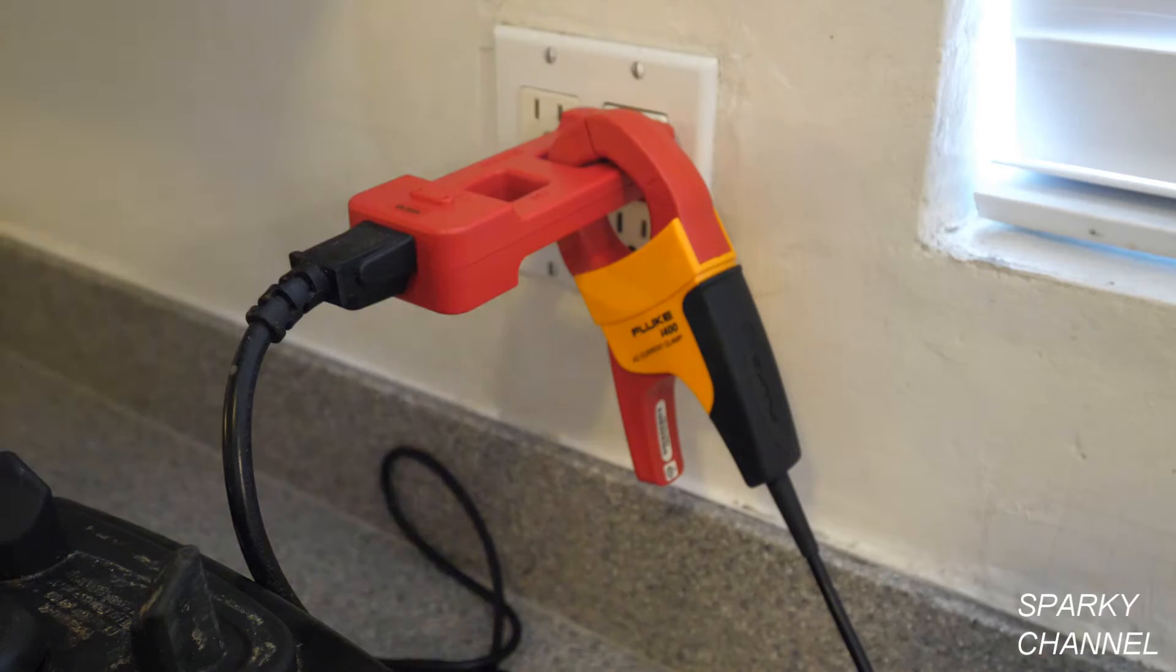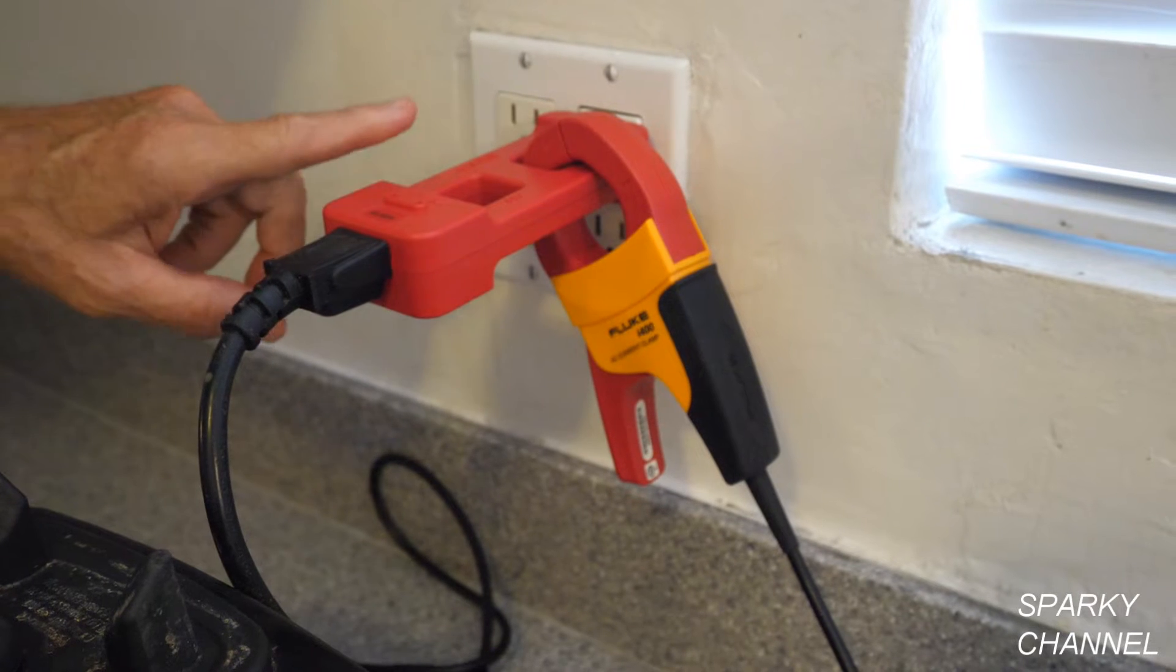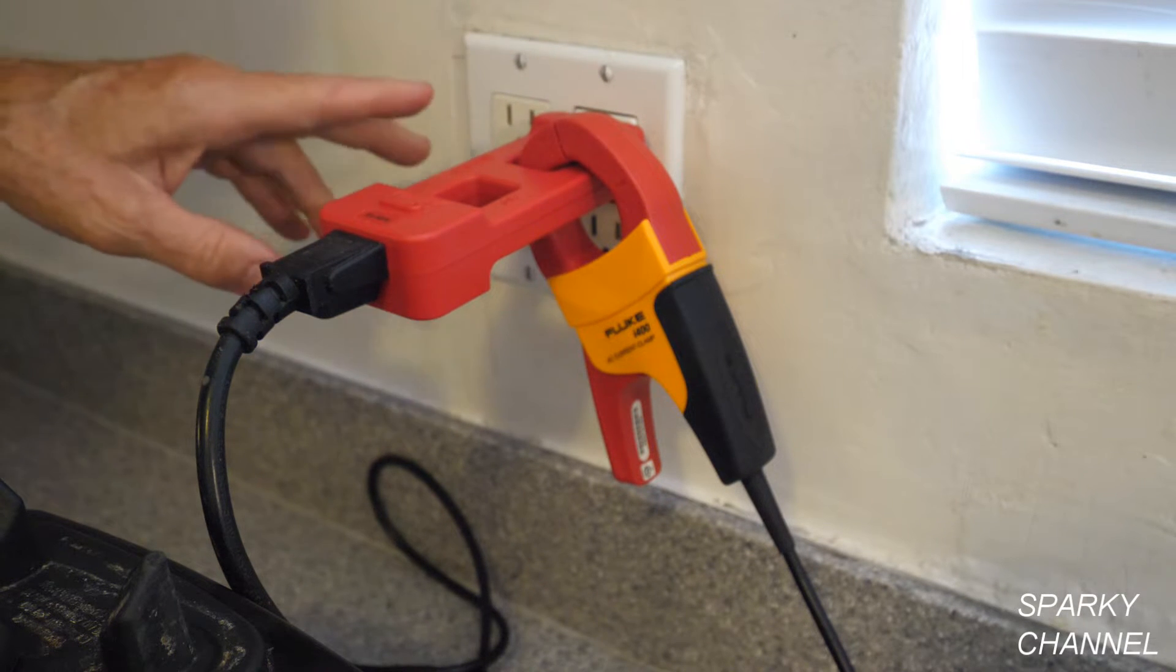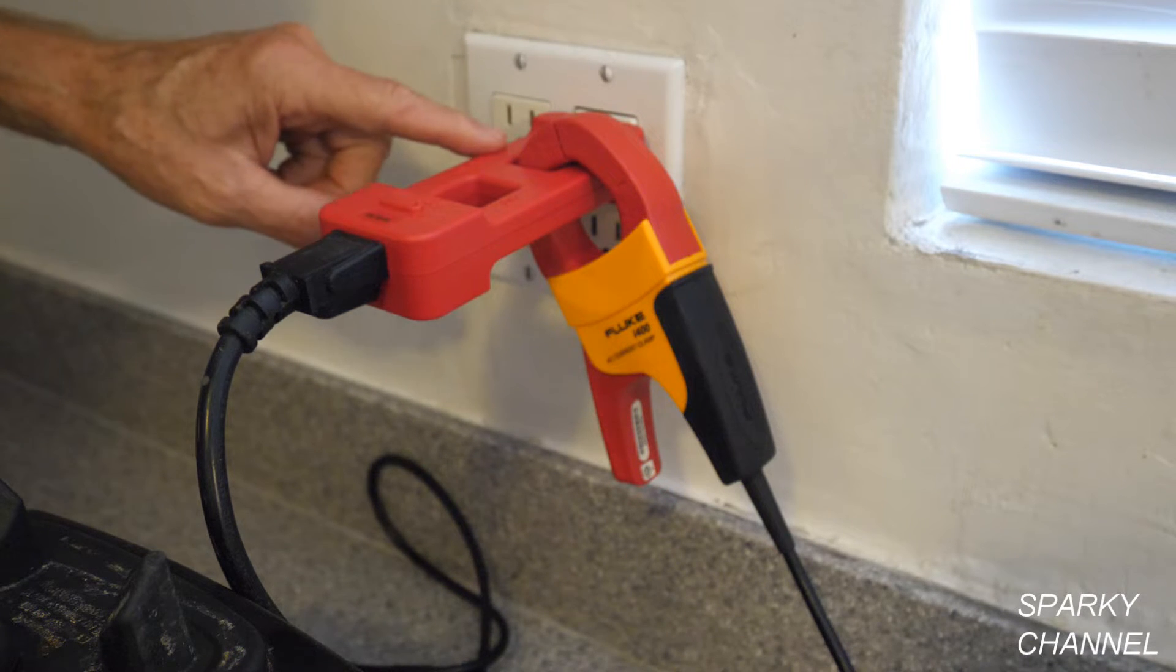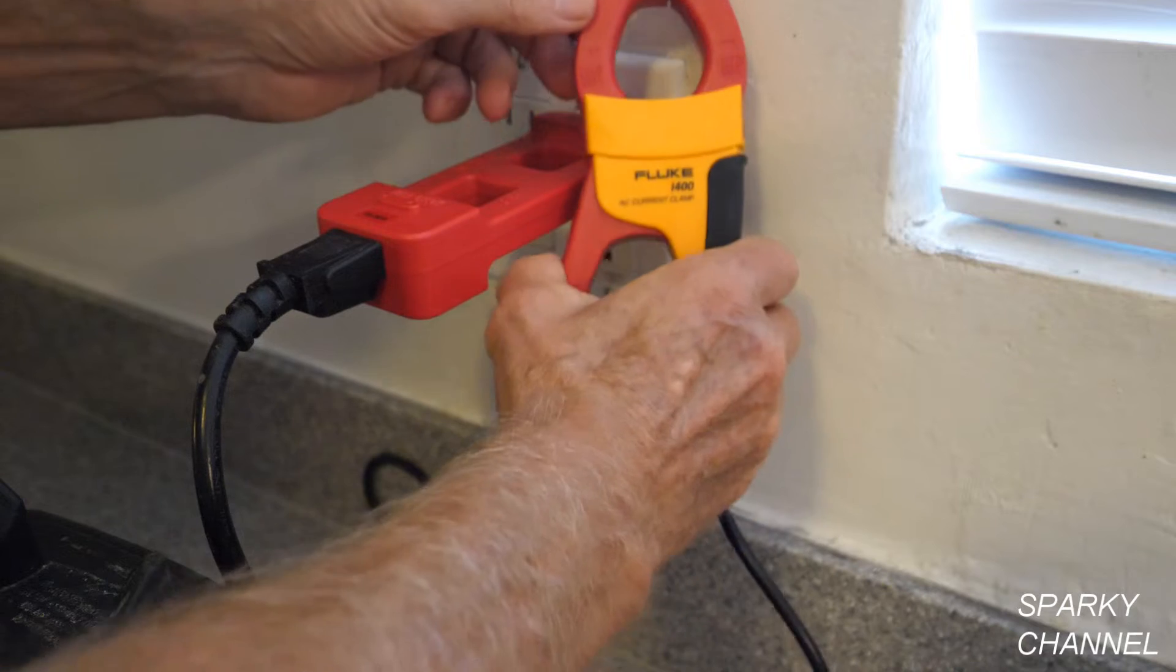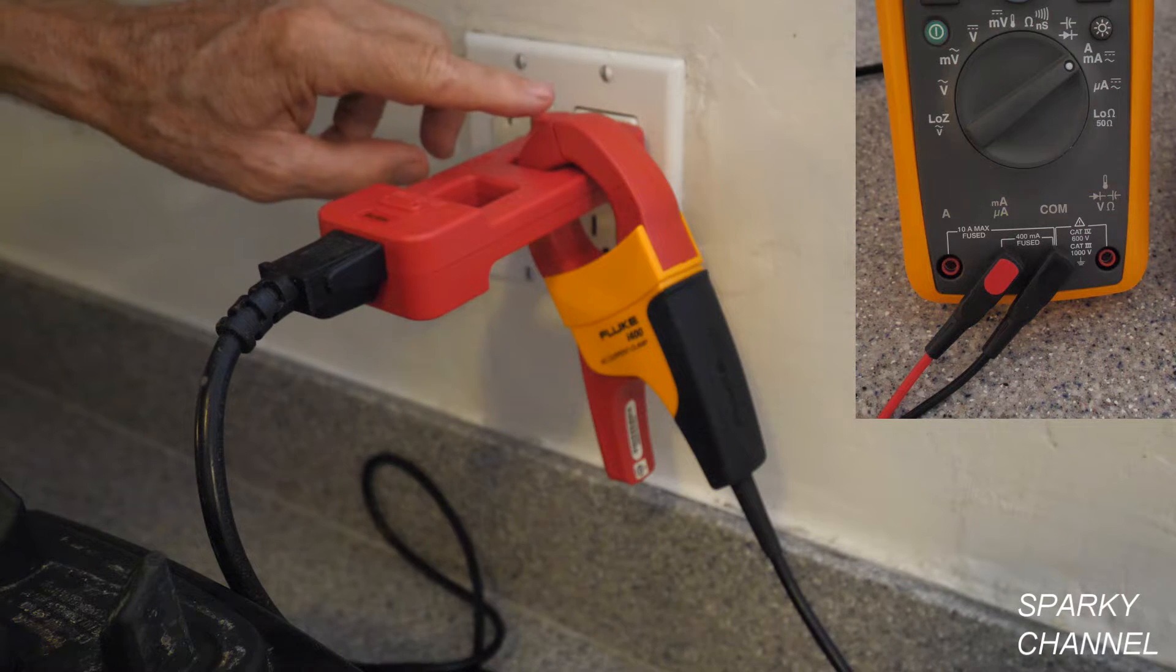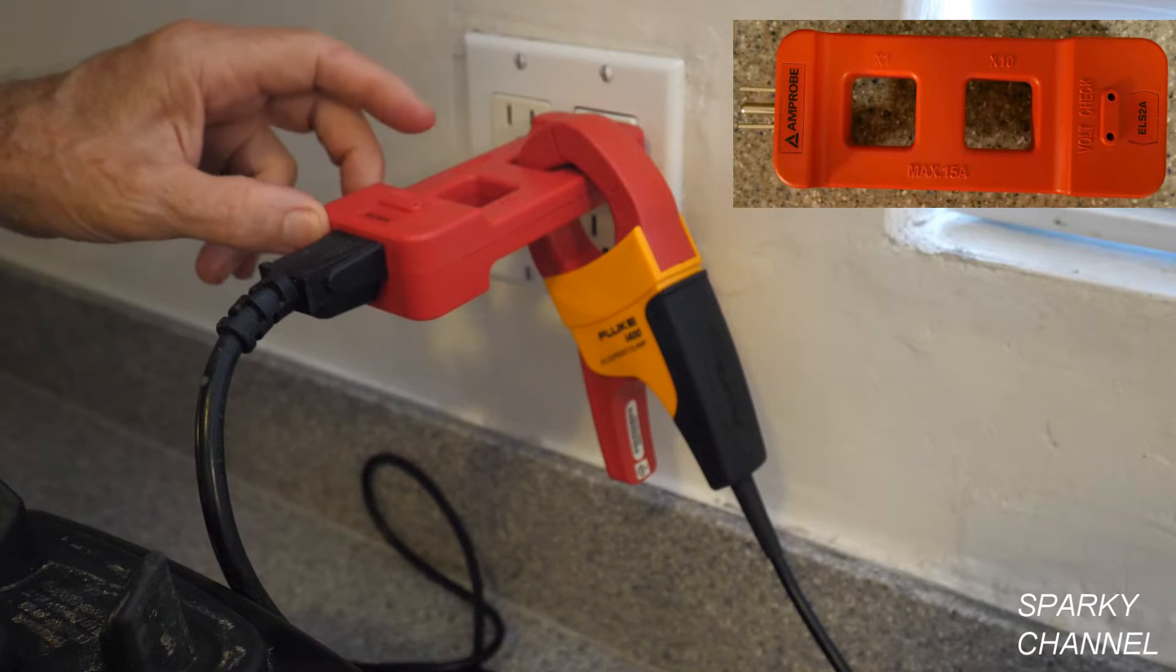This receptacle is part of a 20 amp circuit. I have an AC line splitter plugged into the receptacle. And what this does, the current comes out from the receptacle and flows through these sides of the AC line splitter. And it splits the current to a hot side and a neutral side. Therefore you can put a clamp meter or in this case I have a Fluke I400 AC current clamp that goes to the 289. I'll show you the connection there in just a moment. But you can put a clamp meter or a current clamp into one of these two slots of the AC line splitter.